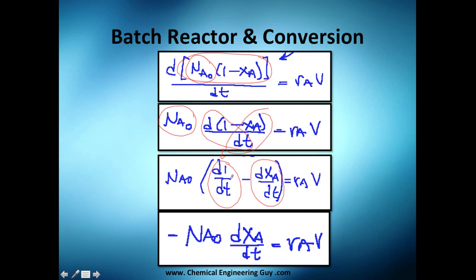Probably you know this is a constant, because the derivative of one is constant, or zero actually, zero not a constant. It's zero. This is zero and I just got this negative out and multiply times NA0, the initial amount of moles of A.